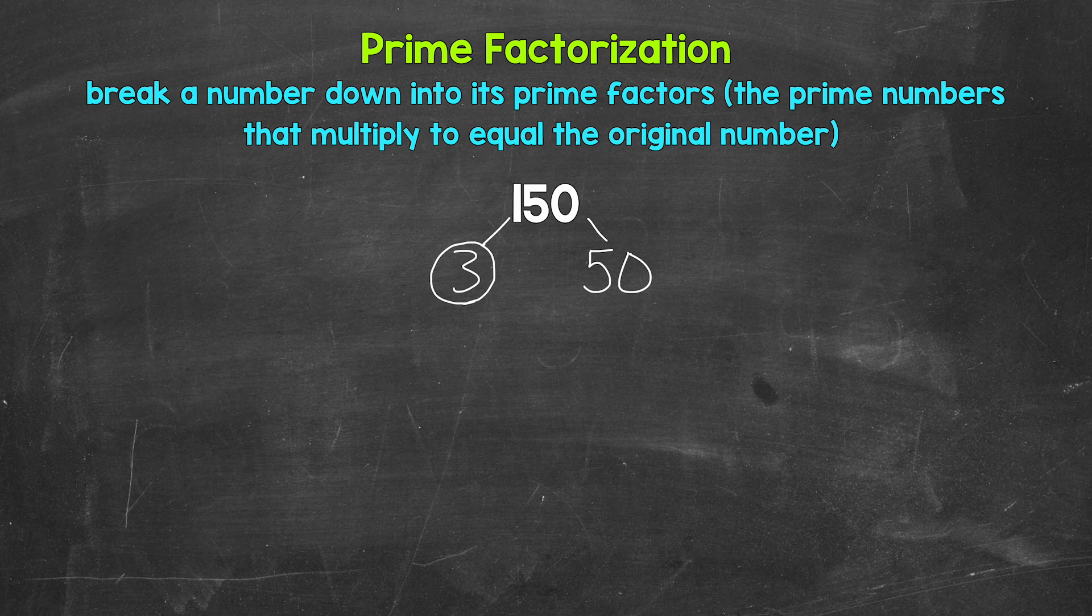Now let's move over to 50. 50 is a composite number. We can break 50 down. So we need to think of factors. Two and 25 are factors. Two times 25 equals 50. So let's break 50 down into 2 and 25.